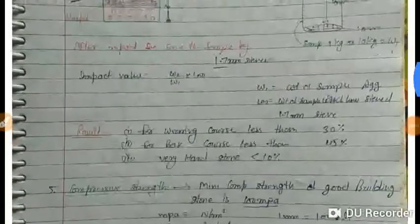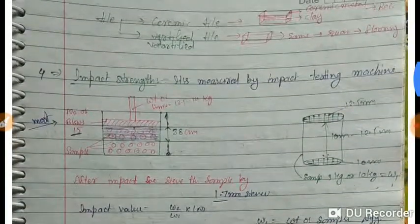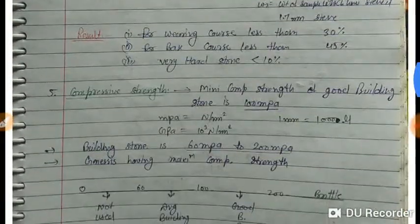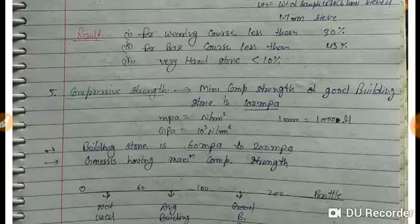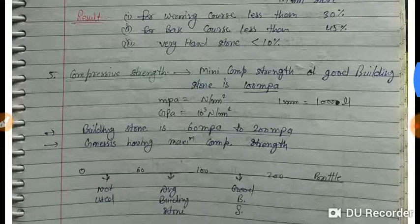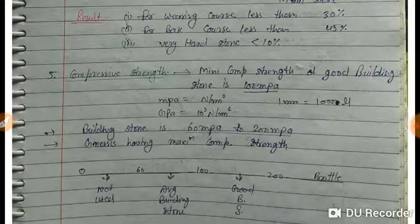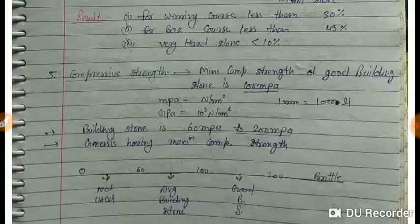In the last lecture we discussed the Los Angeles test and impact test of stone. In this lecture we discuss the compressive strength of building stone — the ability to take compressive load. The minimum compressive strength of building stone is 100 MPa, meaning if we apply a compressive load on the stone it must be able to take 100 MPa load.